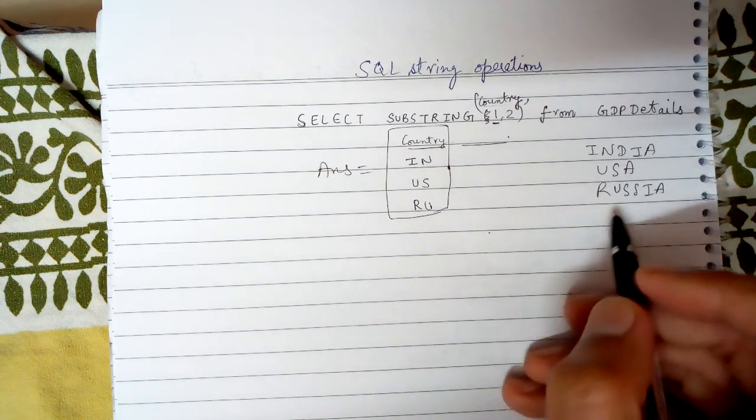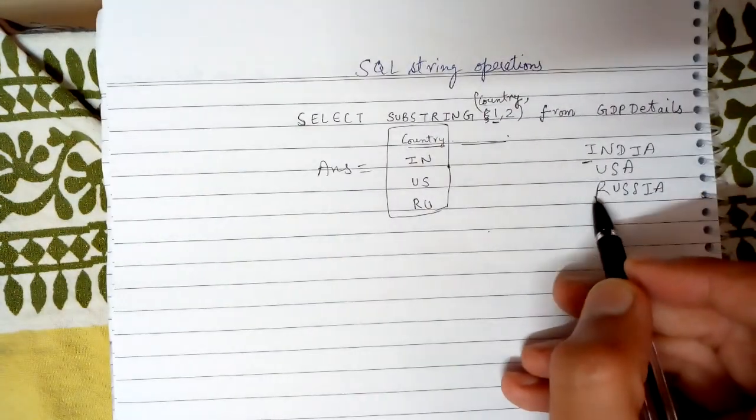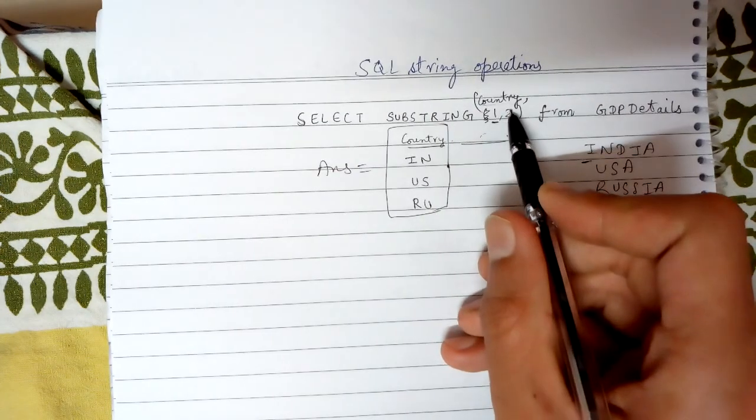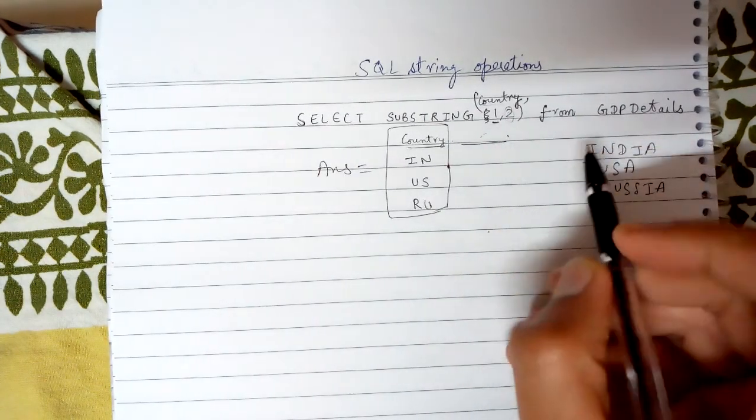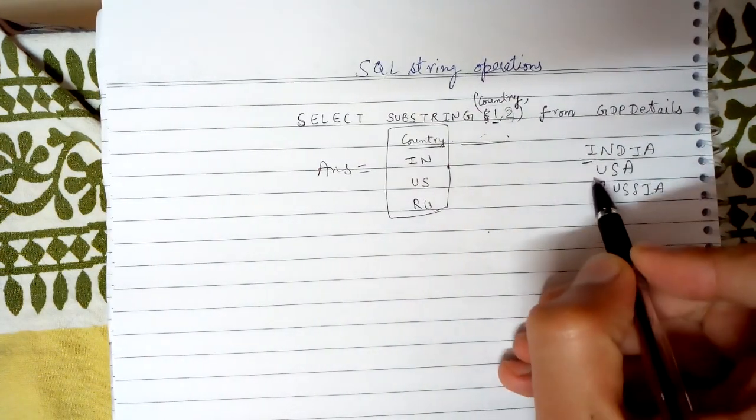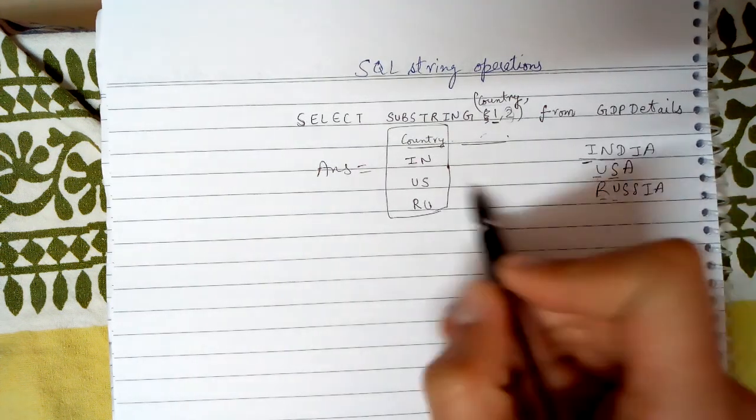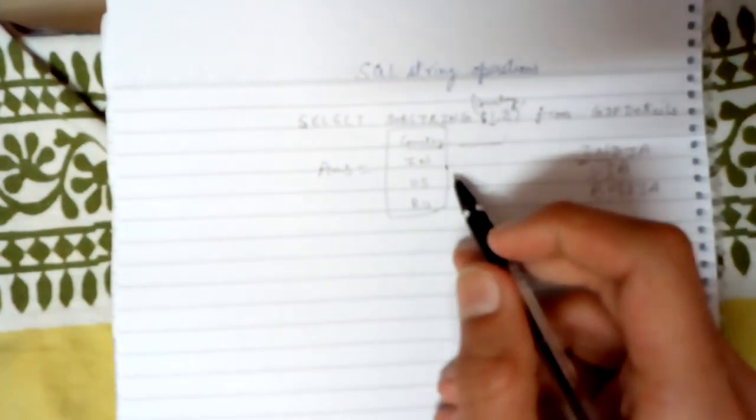start from the first letter, that is I, U, and R, and I will take two letters of it. So I will take I and N, U and S, R and U. I will select this much.